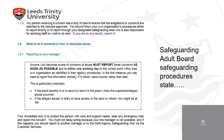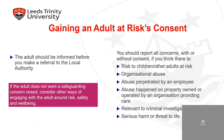The Safeguarding Adults Board emphasises that any person receiving a concern has a duty to report it to relevant agencies. However, before making a referral, it is important that the adult is made aware of this. Having said this, all abuse should be reported without consent if you think there is a risk to children or other adults involved, if it is organisational abuse, if the abuse is perpetrated by an employee, if it could involve abuse on property owned or operated by a care organisation, if it is relevant to a criminal investigation, or if there is serious harm or threat to life.